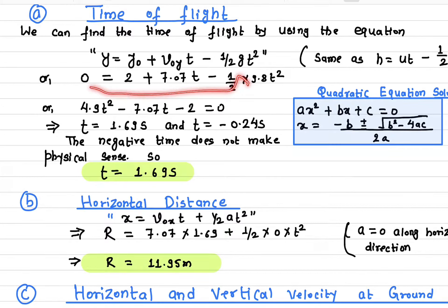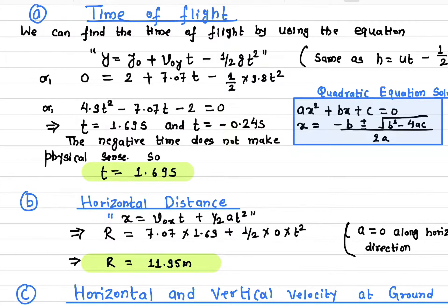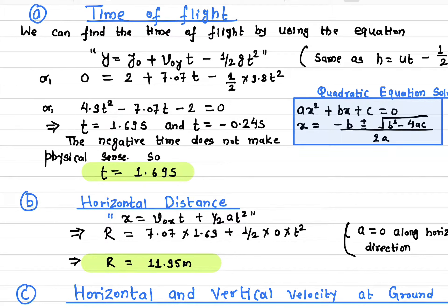This is a quadratic equation. Using the quadratic formula to solve it, we get two time values: t = 1.69 seconds and t = −0.24 seconds.